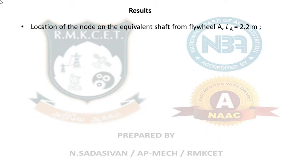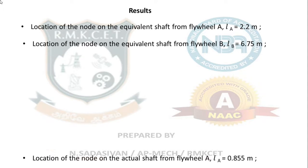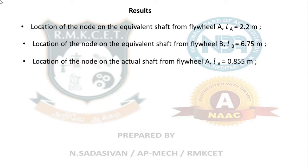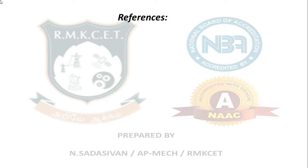Results summary: Location of the node on the equivalent shaft from flywheel A is 2.2 m. Location of the node on the equivalent shaft from flywheel B is 6.75 m. Location of the node on the actual shaft from flywheel A is 0.855 m. Natural frequency of torsional vibration: fnA = fnB = 3.37 Hz.